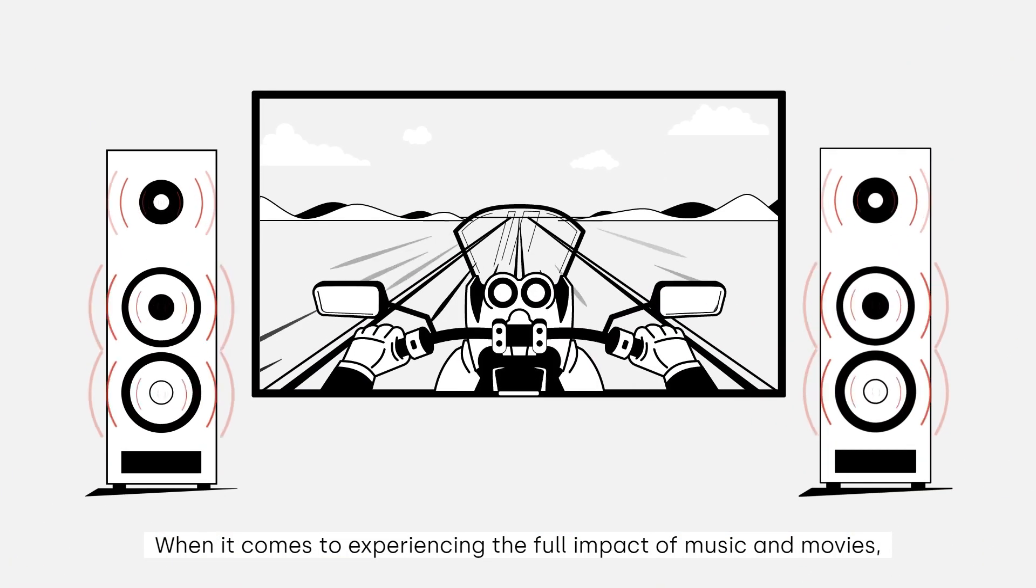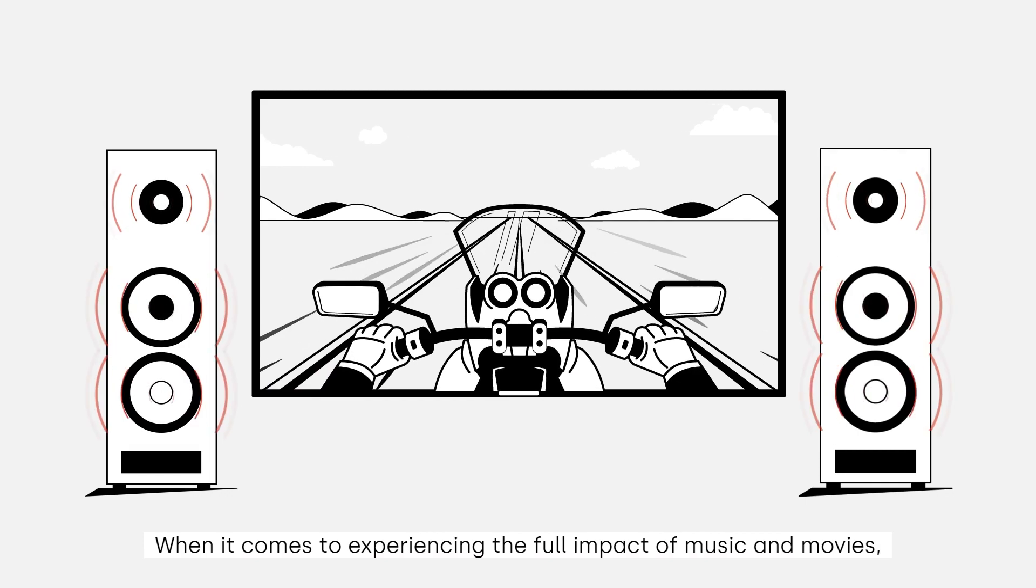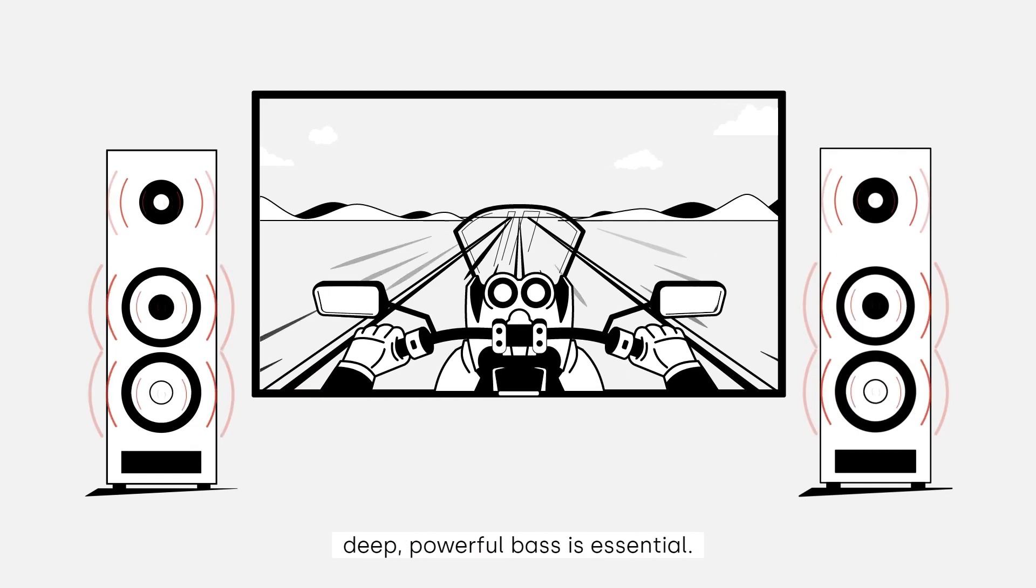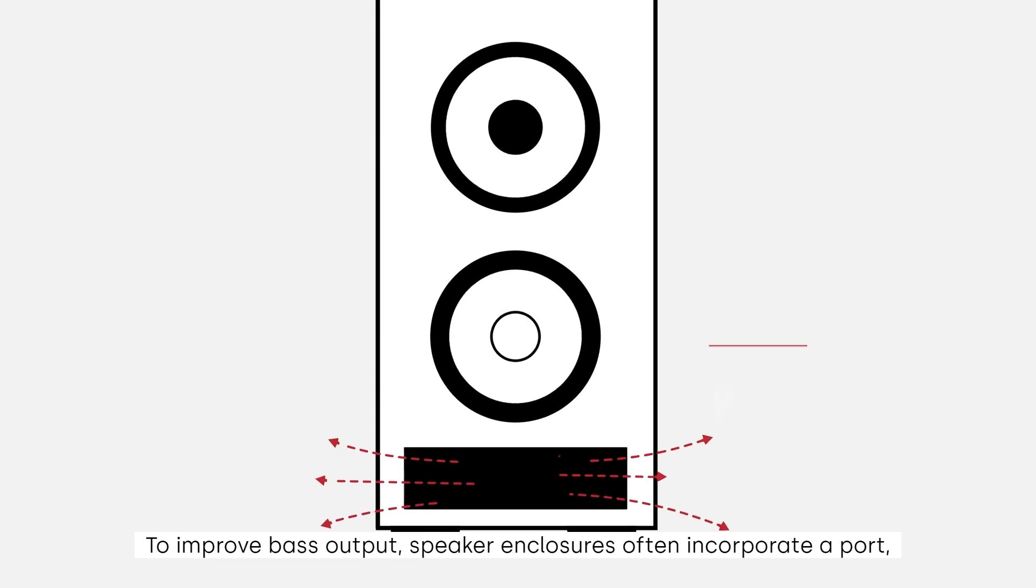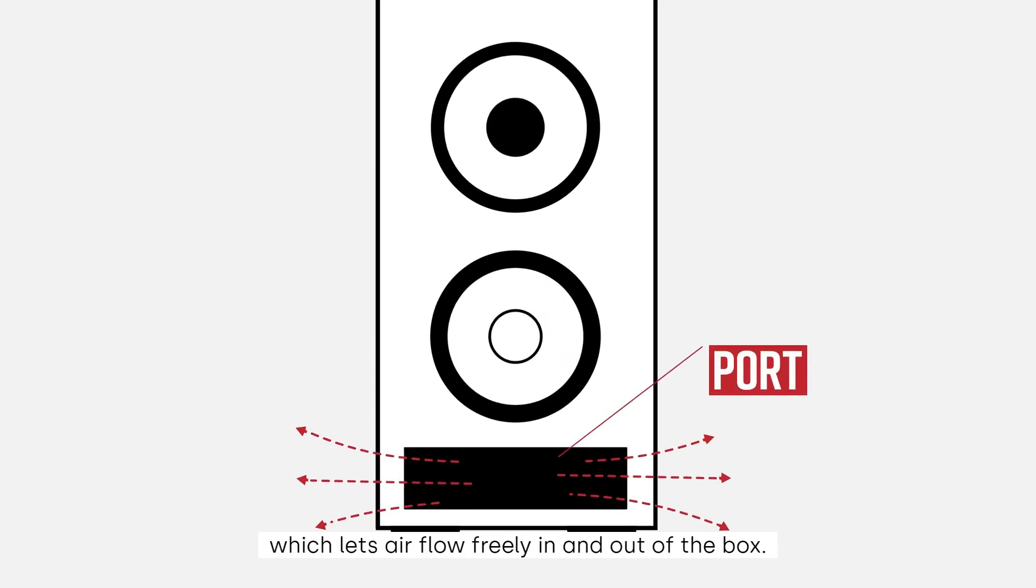When it comes to experiencing the full impact of music and movies, deep, powerful bass is essential. To improve bass output, speaker enclosures often incorporate a port, which lets air flow freely in and out of the box.